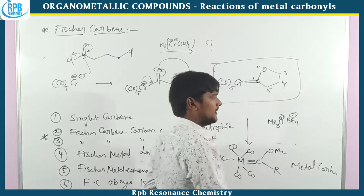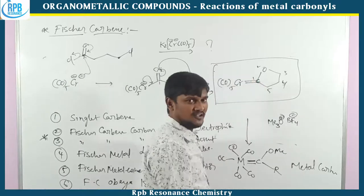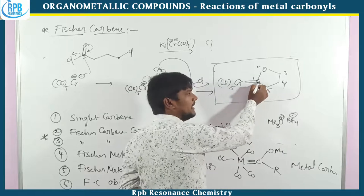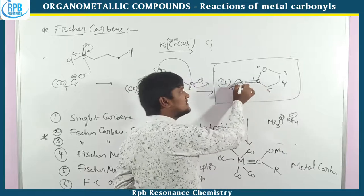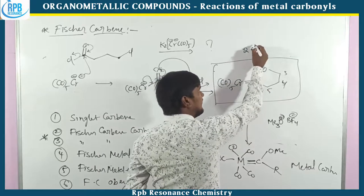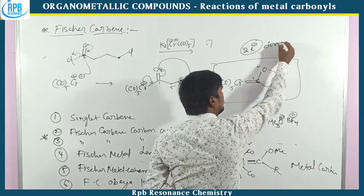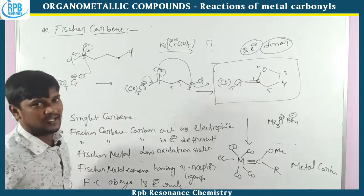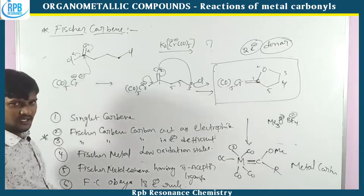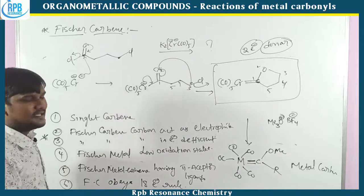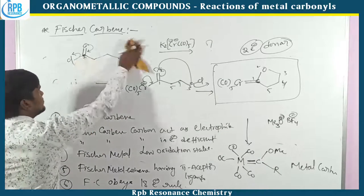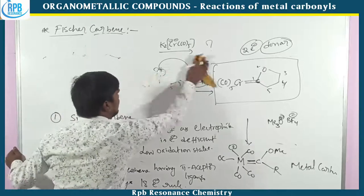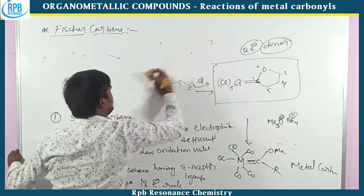Before going to Schrock carbene: whether it is Schrock or Fischer, the carbene carbon donates a pair of electrons to the metal — it is simply a two-electron donor form, which is already discussed in the electron count methods. Now let's move on to the synthesis and characteristic features of Schrock carbene.